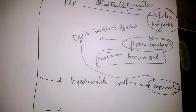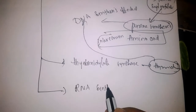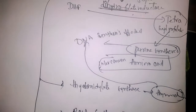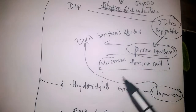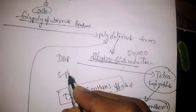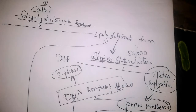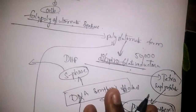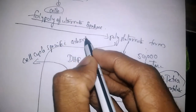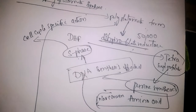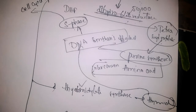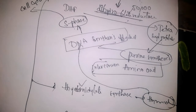Methotrexate also affects RNA synthesis and protein synthesis. DNA synthesis is primarily affected by inhibition of dihydrofolate reductase and thymidylate synthase. Since DNA synthesis takes place in the S phase of the cell cycle, methotrexate has cell cycle-specific action. In summary, it mainly inhibits two enzymes: dihydrofolate reductase and thymidylate synthase, and also inhibits RNA and protein synthesis.